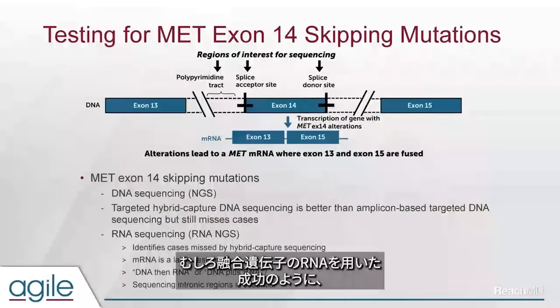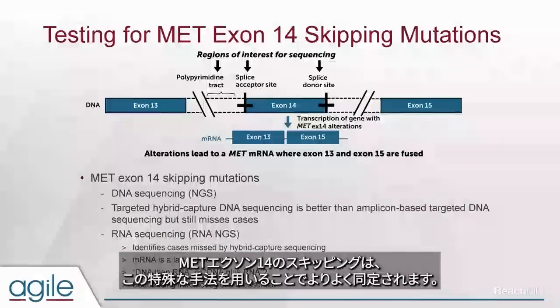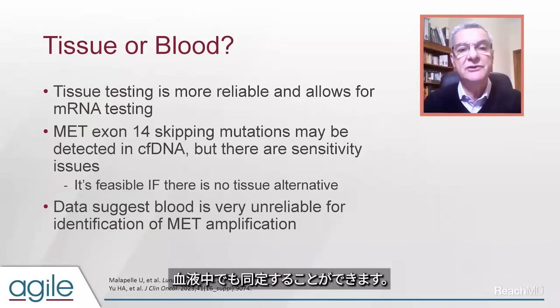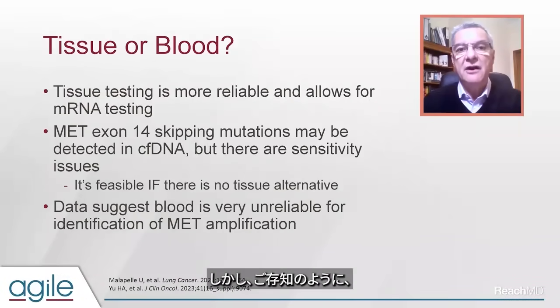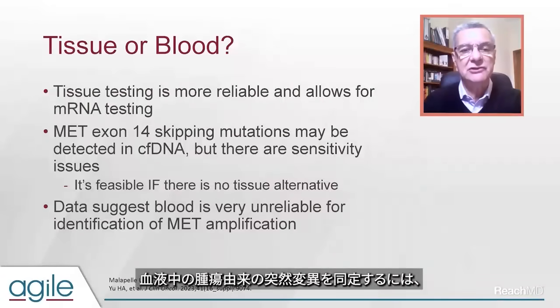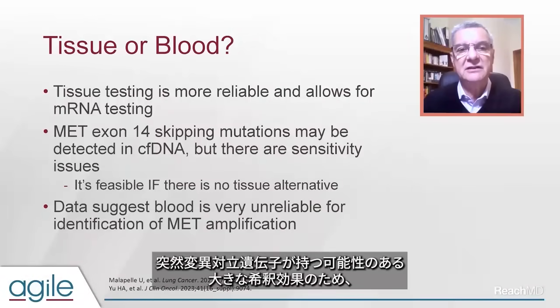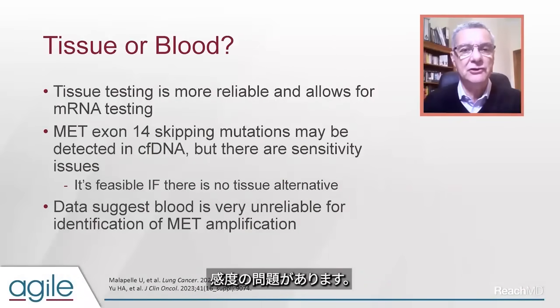The yield is better if we use RNA sequencing, again usually in the context of next-generation sequencing. RNA sequencing appears to be better at picking up these alterations; it avoids some of the complications around the intronic involvement by the mutation. Rather like the success using RNA with fusion genes, MET exon-14 skipping is better identified using this particular technique. Tissue is definitely the preferred medium, but you can also identify mutations in the blood, though there are sensitivity issues due to the dilutional effect of non-tumor cell DNA.